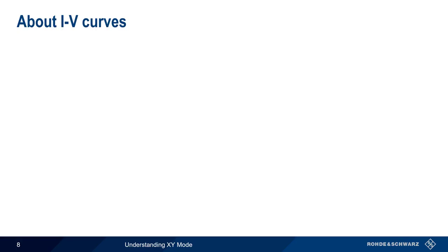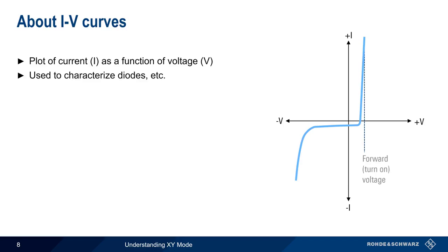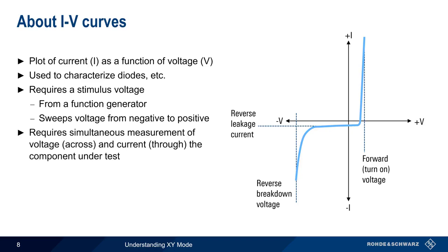The next application of XY mode is creating IV curves. As the name implies, IV curves are a plot of current, I, as a function of voltage, V. These curves are used, for example, to characterize diodes, since important values such as the forward or turn-on voltage, reverse leakage current, and reverse breakdown voltage can easily be read off this type of curve. The first requirement in creating an IV curve is a stimulus voltage, which can be provided by a function generator sweeping the voltage from negative to positive. The second requirement is simultaneous measurement of the voltage across and the current through the component under test. These values are then plotted in XY mode to produce the IV curve.